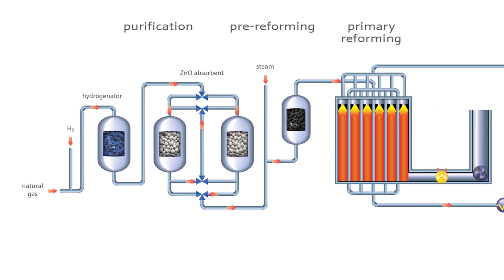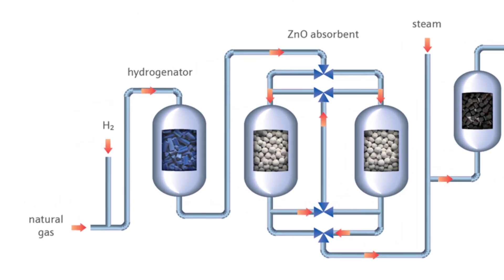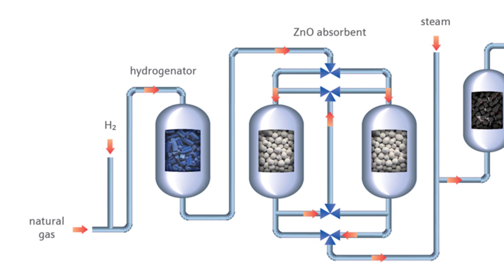Feedstock purification is an important step to any hydrogen plant to ensure contaminants don't damage the downstream equipment or catalysts. Having a robust purification system assists with getting you the longest life possible out of your catalyst.